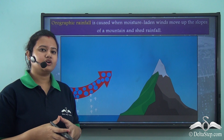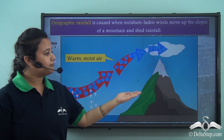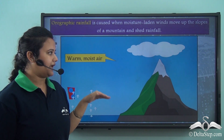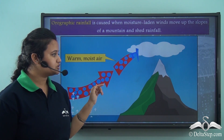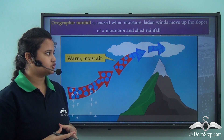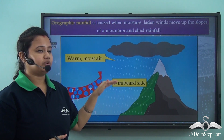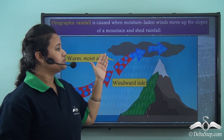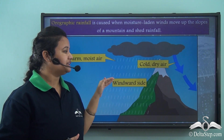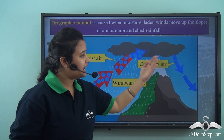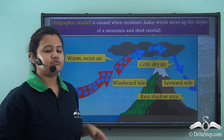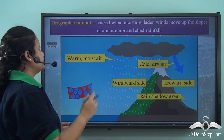Sometimes rainfall is caused when moist wind gets obstructed by a mountain range. As warm moist air is obstructed by the mountain, it rises over it, and as it ascends the slope, water vapor condenses to form clouds. These clouds become too heavy and shed rainfall on the windward side of the mountain — the side facing the wind. As winds move down the other side, they become too dry and cause no rainfall on the leeward side. This is known as orographic rainfall.